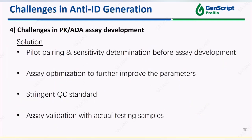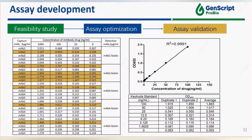Besides the antibody generation part, the assay development also comes with its own challenges. To improve the success rate, it is commonly recommended to perform a pilot antibody pairing and initial sensitivity determination to select the best pair of anti-IDs for downstream assay development. In addition, assay optimization with stringent QC standards and assay validation with actual testing samples will also help to minimize the risk. This is a sample data from an assay feasibility study. Five candidates were performed with pairing in the format of checkerboard ELISA. After obtaining possible pairs, further standard curves are established to determine the sensitivity and linearity, which can help us to select the best performing pairs for assay development.